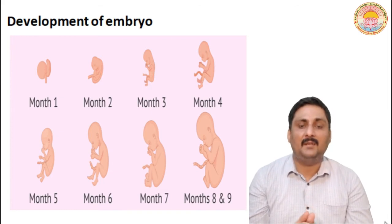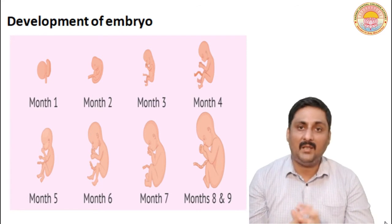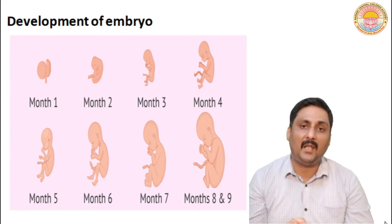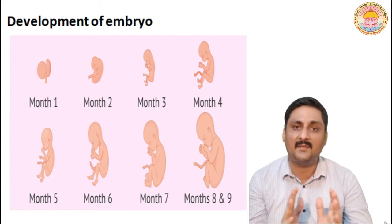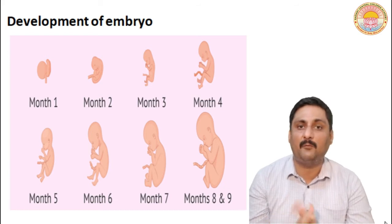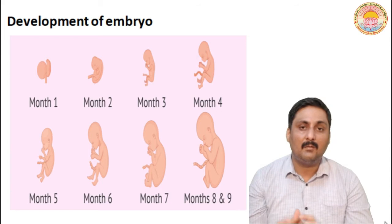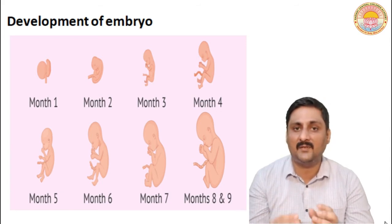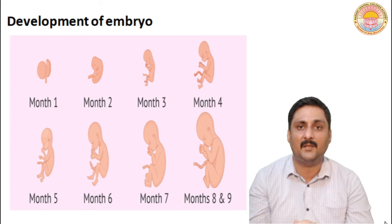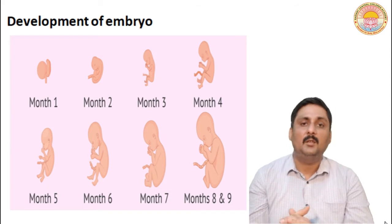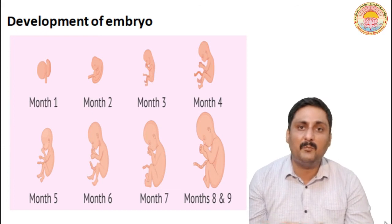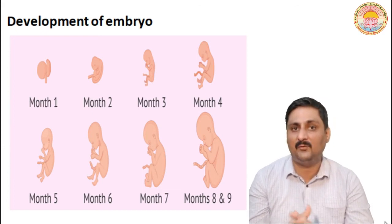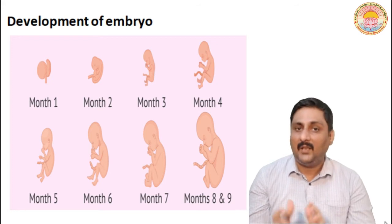During the first month, the heart is formed and the sound of the heart can be heard with the help of a stethoscope. In the second month, hands and digits are formed. In the third month, most organ systems including the genital system are completely developed. In the fifth month, hairs present on the body can be observed and the first movement of the fetus is usually observed.